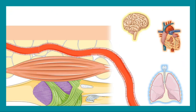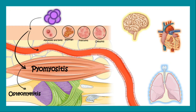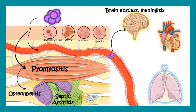Now let us move to the infections. From superficial to deep, Staphylococcus aureus can produce abscess or boils, impetigo, folliculitis or cellulitis on the skin. Then it can move deeper and either go to blood or muscles. In the muscles, it can produce pyomyositis. It can go to the bones and produce osteomyelitis, and in the joints it can produce septic arthritis. If in the bloodstream, it can reach organs like the brain and cause brain abscess or meningitis, the heart and cause infective endocarditis, and the lungs and cause pneumonia.